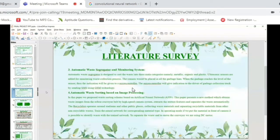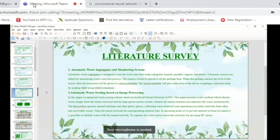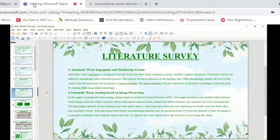The third literature paper is on automatic waste segregator and monitoring system. Here, waste is categorized into three categories: metallic, organic, and plastic. Ultrasonic sensors are used to monitor the waste levels, and when the sensors send a message to the controller, the controller gives an indication to the garbage driver using GSM technology in the form of an SMS.